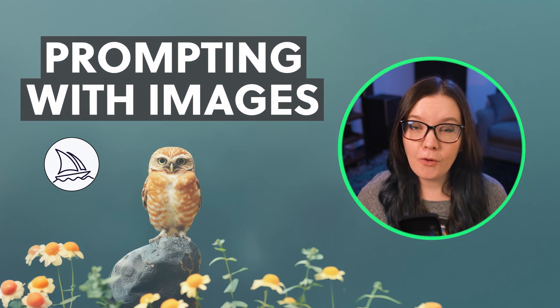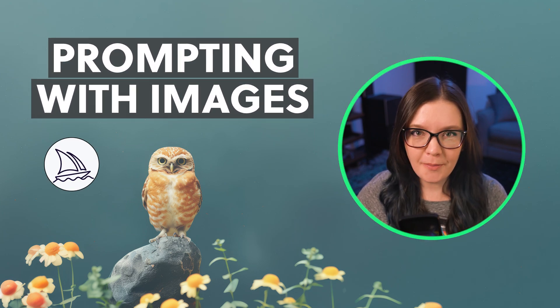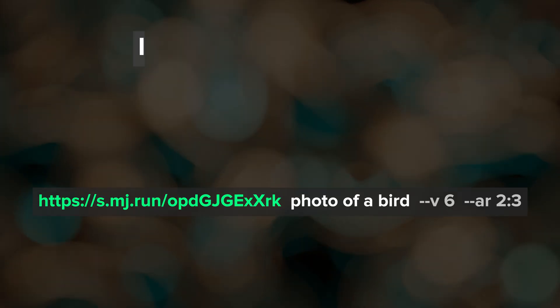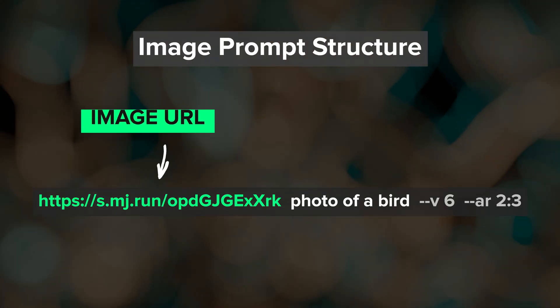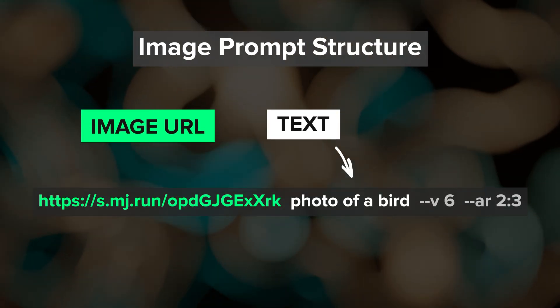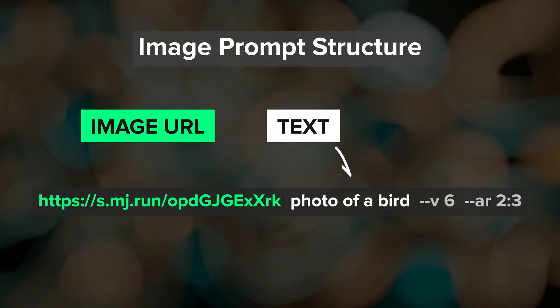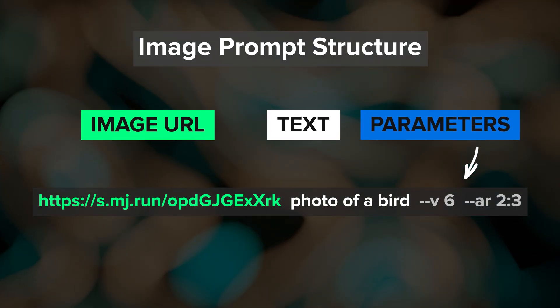Did you know that there are four ways that you can use images in your MidJourney prompts? Let's start with the image prompt. The standard image prompt contains an image URL at the beginning, followed by your prompt text, and then any parameters that you want to include.